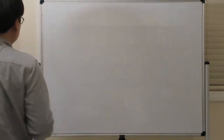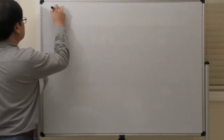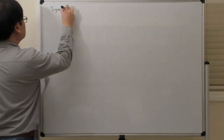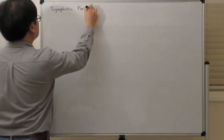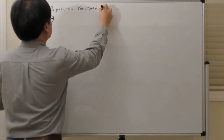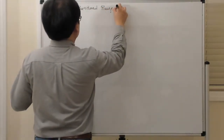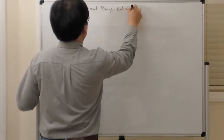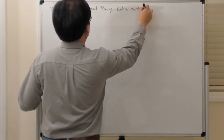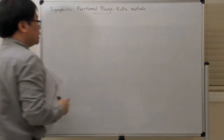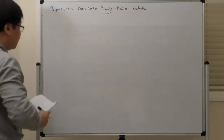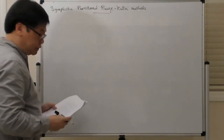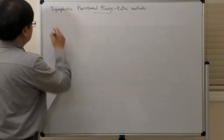Okay, so now we're going to talk about symplectic partitioned Runge-Kutta methods, and we're going to see how you can cast them in the form of a variational integrator.